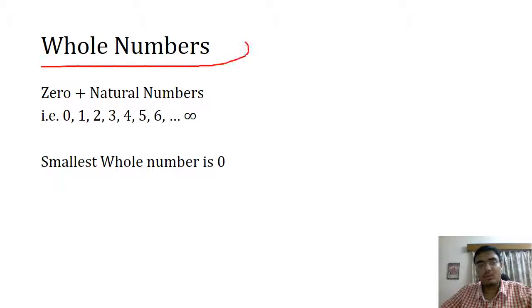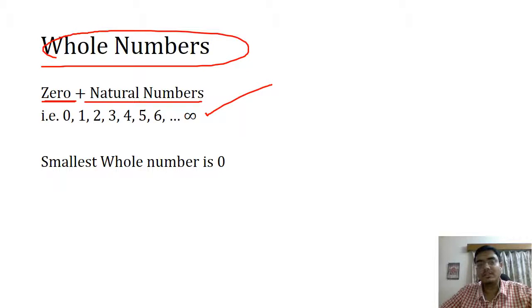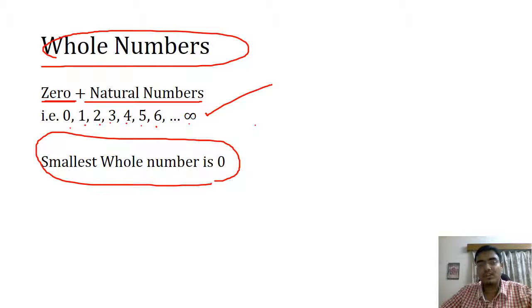What are whole numbers? When we include 0 alongside our natural numbers, we get whole numbers: 0, 1, 2, 3, 4, 5, 6, and so on till infinity. The smallest whole number is 0.